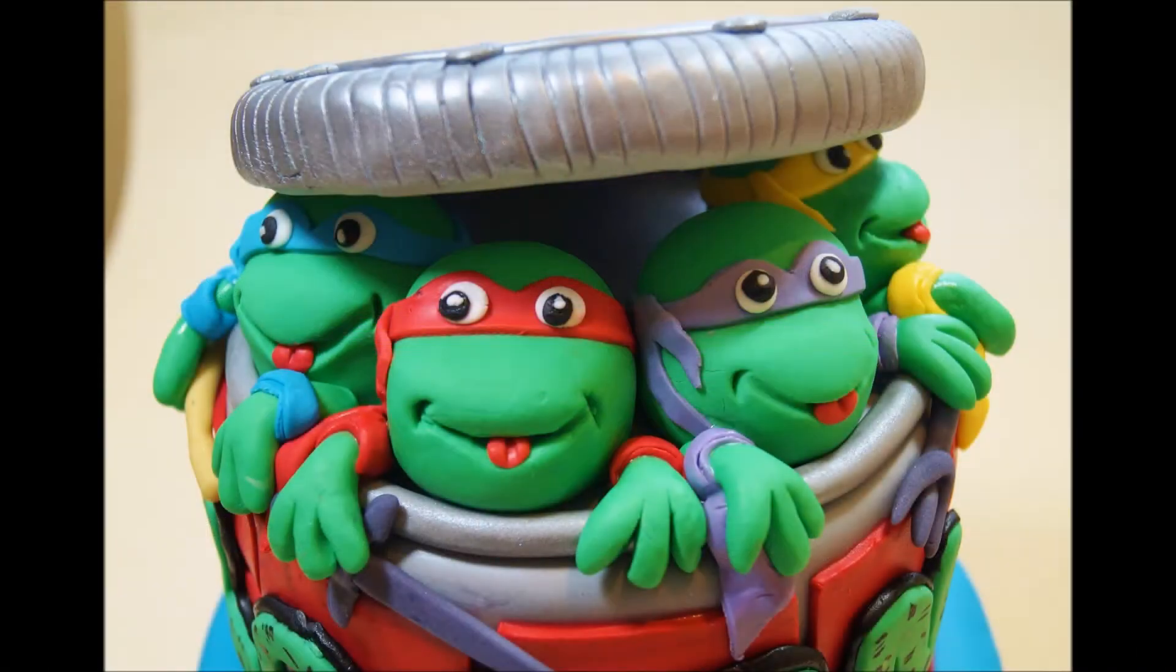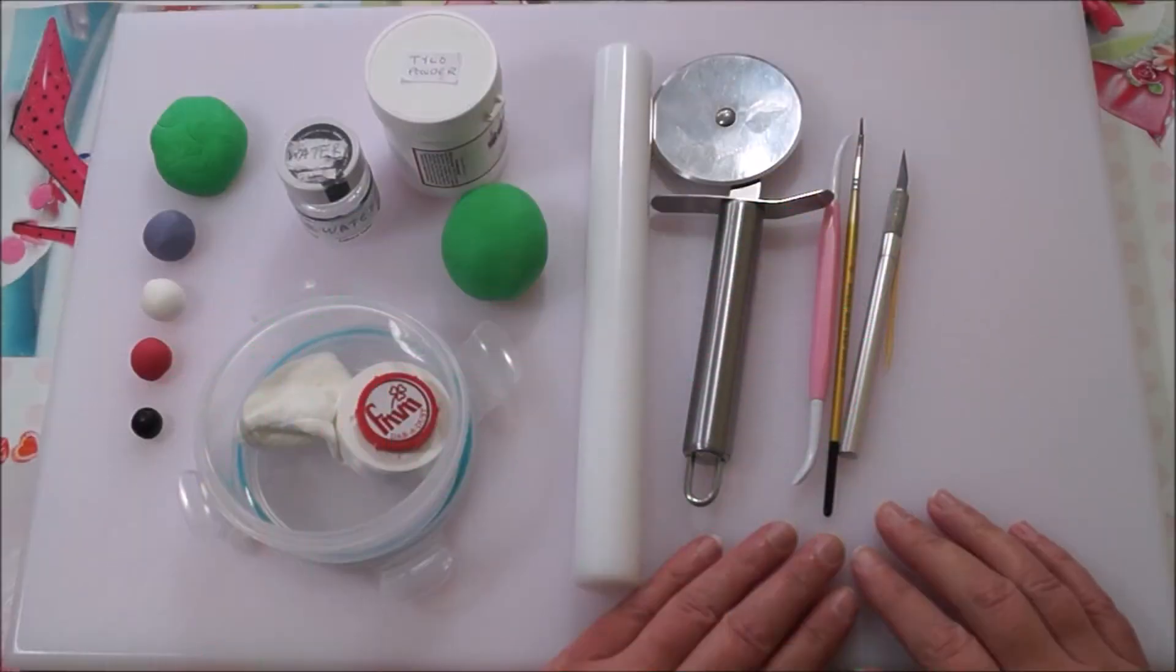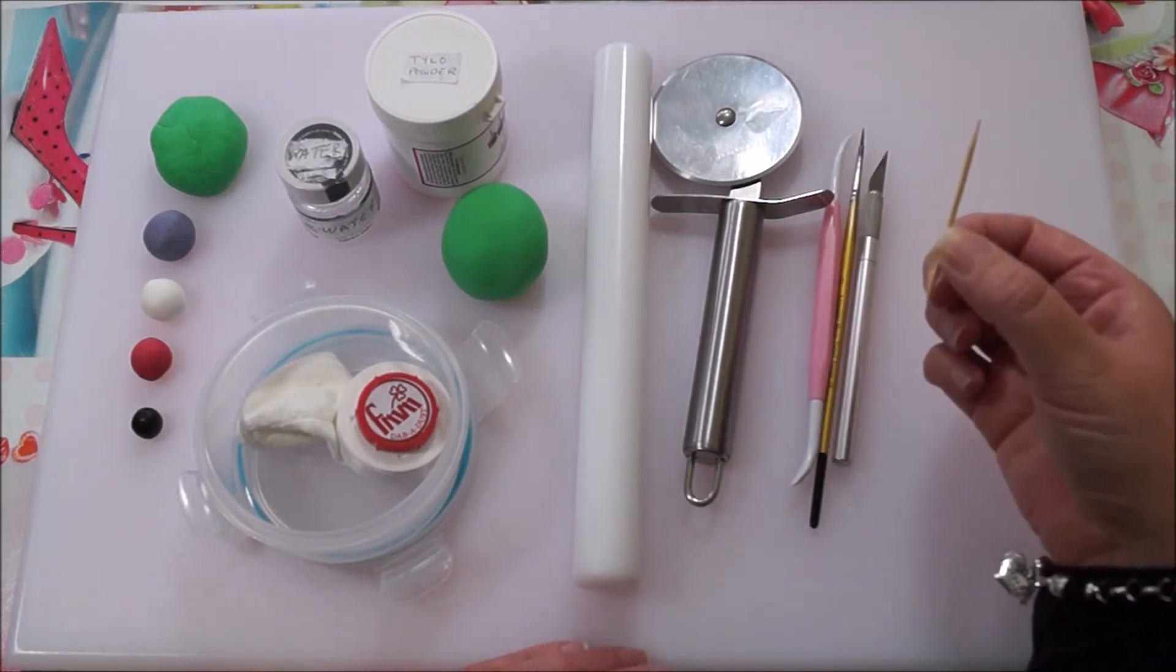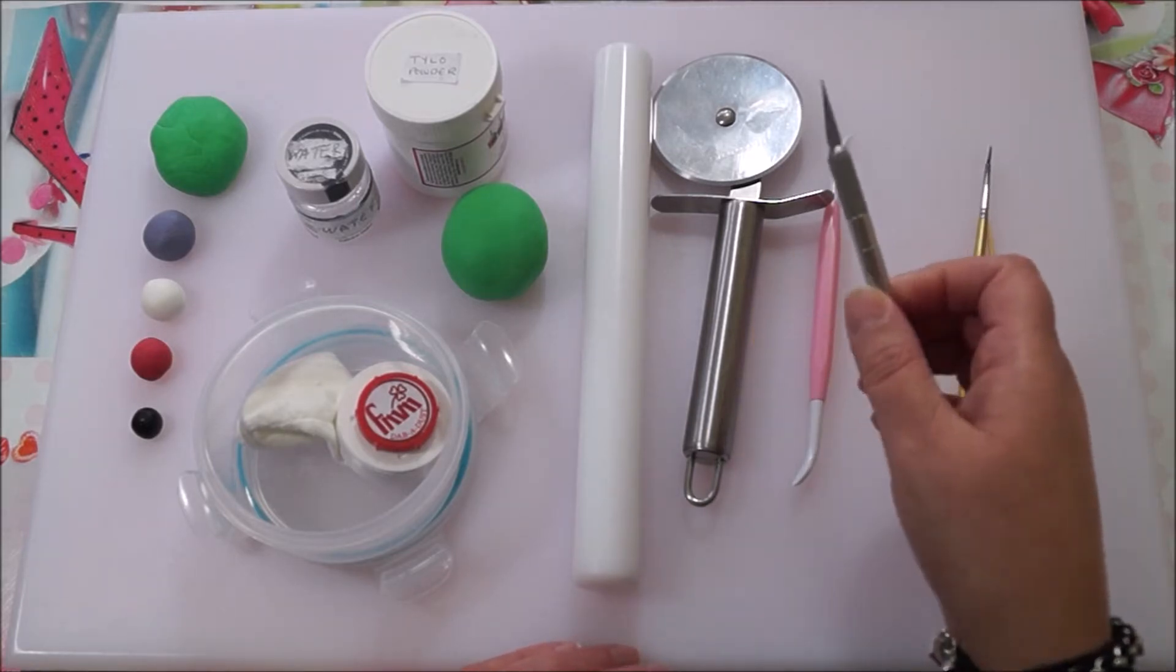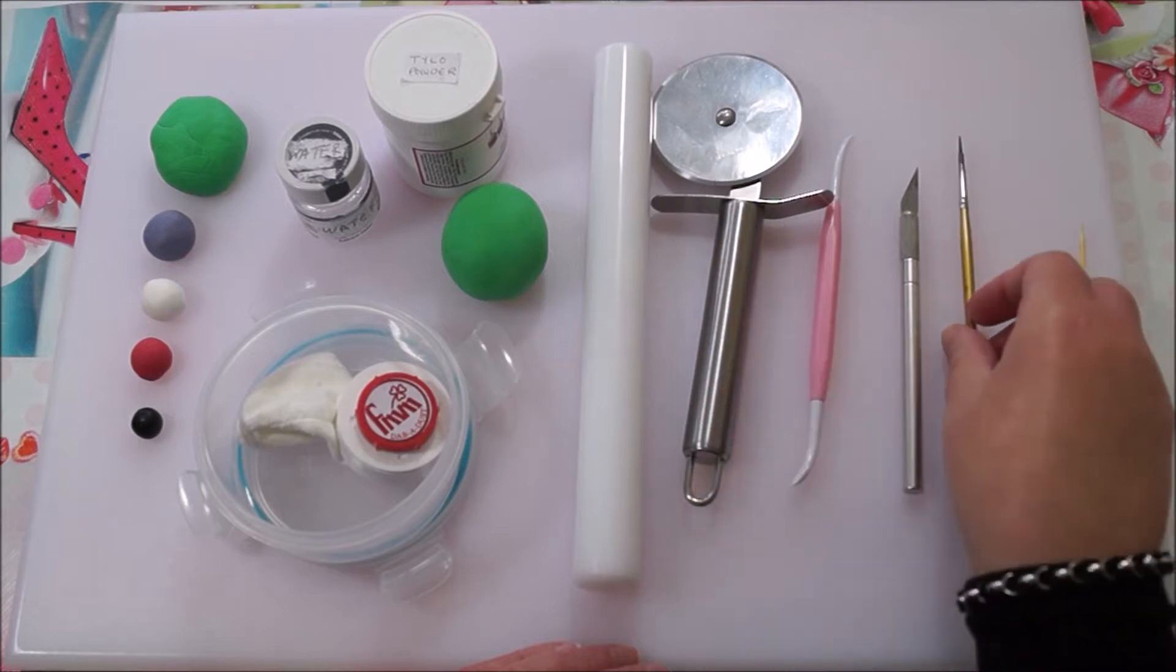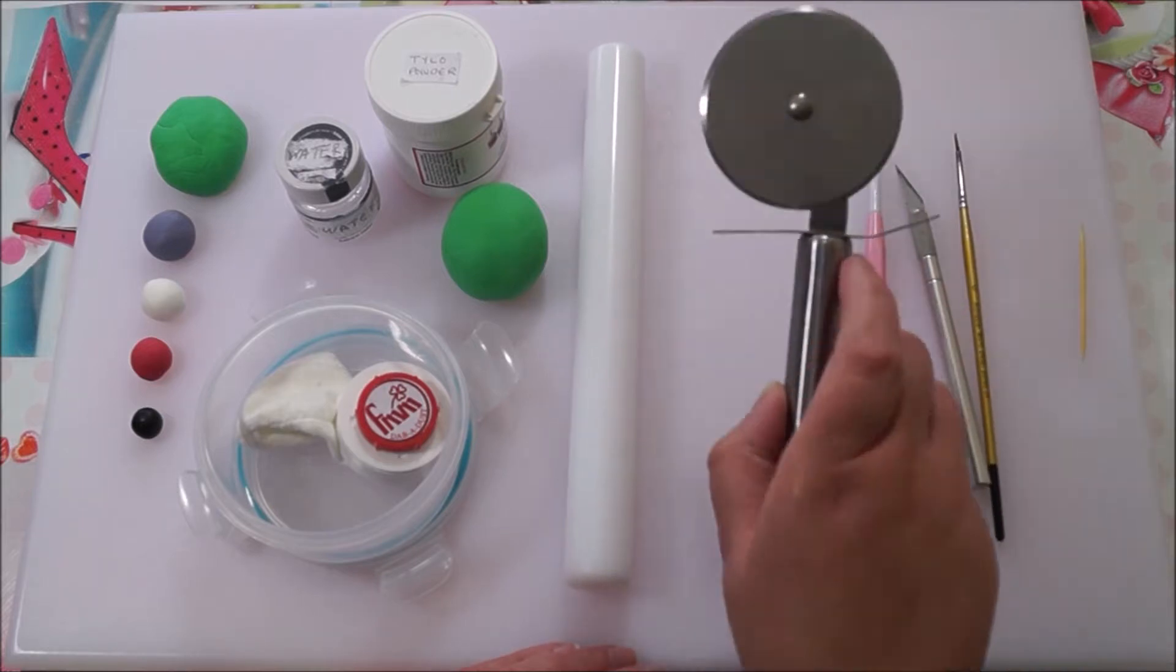Hi everyone, today I'm going to show you how I made these Teenage Mutant Ninja Turtle fondant cake toppers. The tools and equipment that you will need are a toothpick, an exacto knife, a paintbrush, a veining tool, a pizza cutter, and a small rolling pin.